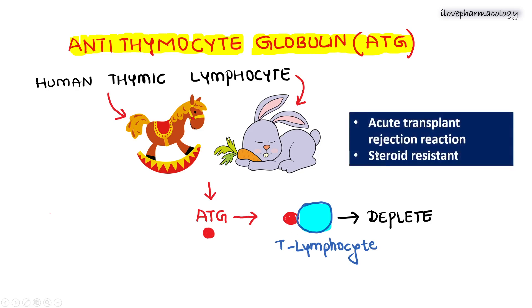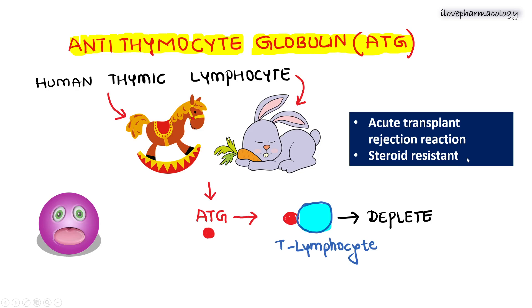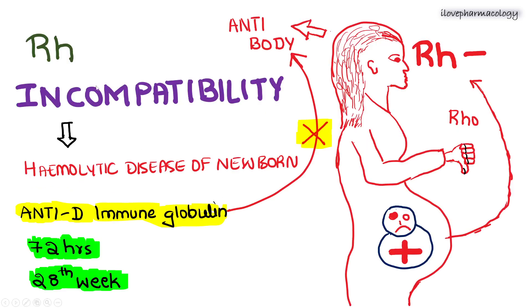ATG is very useful during acute transplant rejection reactions and in steroid-resistant cases. The worrisome side effects of antithymocyte globulin are serum sickness and anaphylaxis.